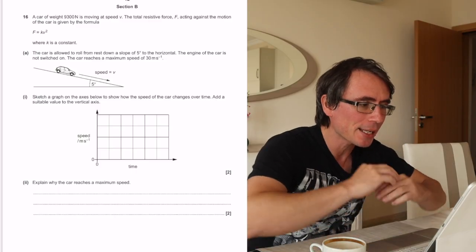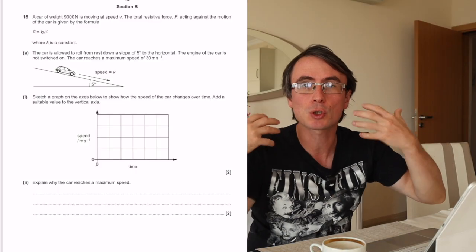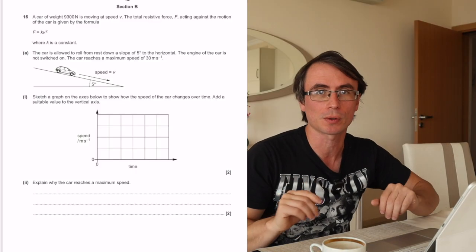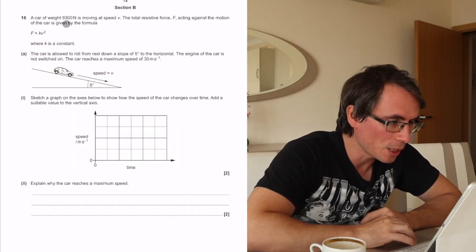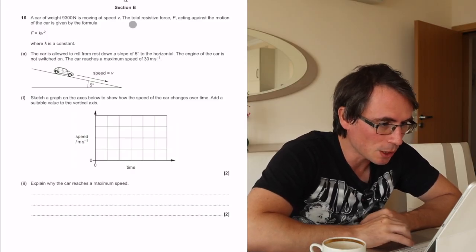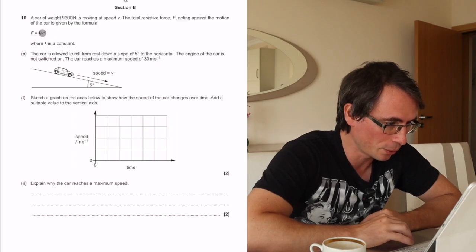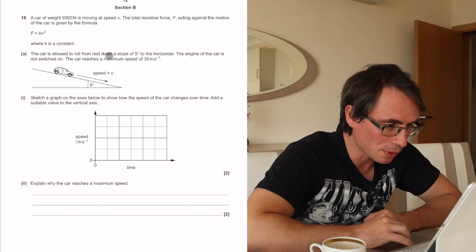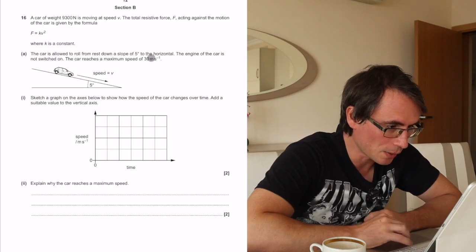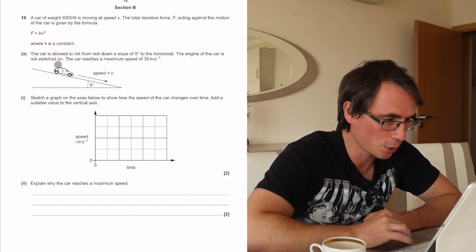Here is a question on mechanics. This question is from OCR, but it's totally applicable to all exam boards. We have a car of weight 9,300 Newtons moving at speed V. The total resistive force acting against the motion is given by the following formula. The car is rolled down from rest on a slope of 5 degrees, and the engine of the car is not switched on.